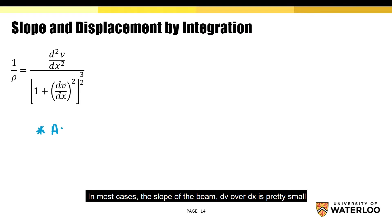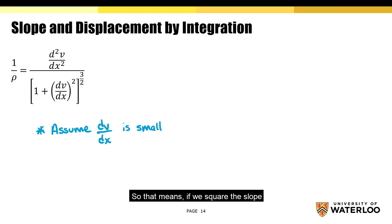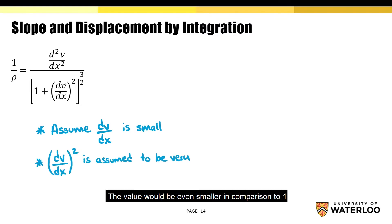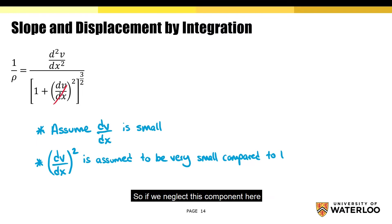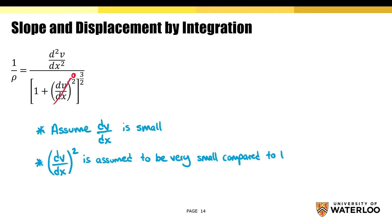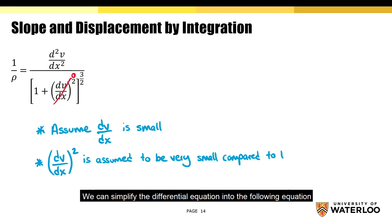In most cases, the slope of the beam, dv over dx, is pretty small. So that means if we square the slope, the value will be even smaller in comparison to 1. So if we neglect this component here, we can simplify the differential equation into the following equation.